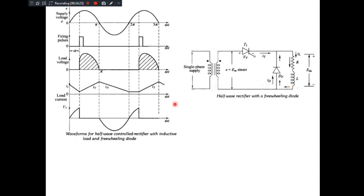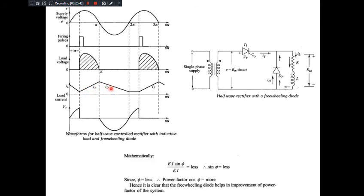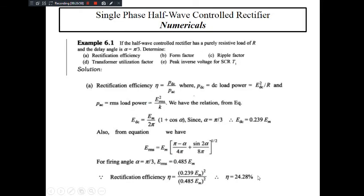This freewheeling diode is a very important part. The operation remains the same; the only difference is how you get IT and ID. Mathematically, with the freewheeling diode, the power factor — cos φ — is improved. Hence it is clear that the freewheeling diode helps in the improvement of power factor.